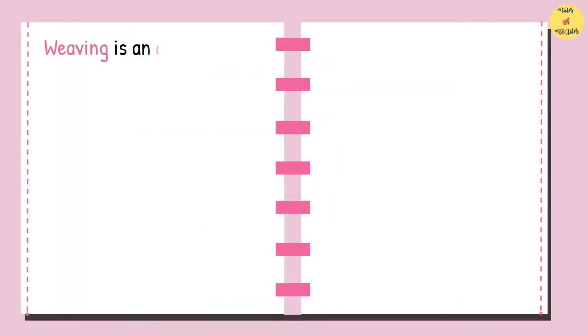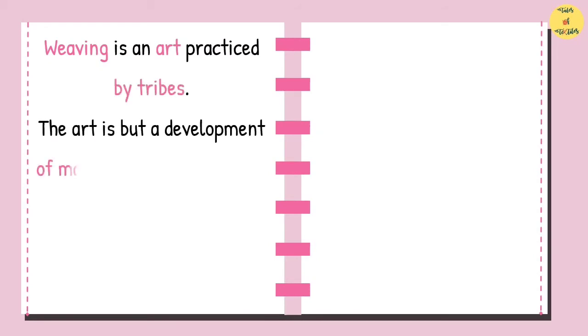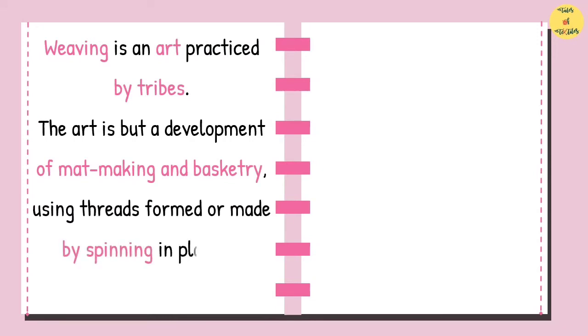Weaving is an art practiced by tribes. The art is but a development of mat-making and basketry, using threads formed or made by spinning in place of coarser filaments.